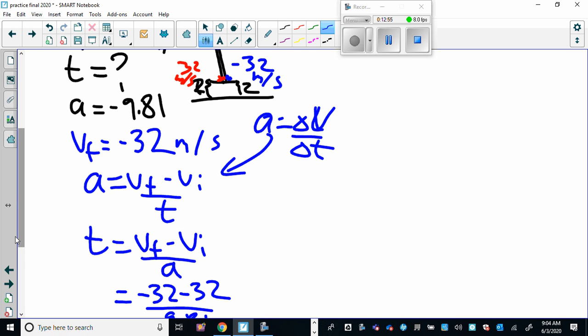Negative 32 minus 32 divided by negative 9.81, and the negatives are all going to cancel out, and you're going to end up with an answer of 6.52 seconds. That's probably the easiest way to do it.